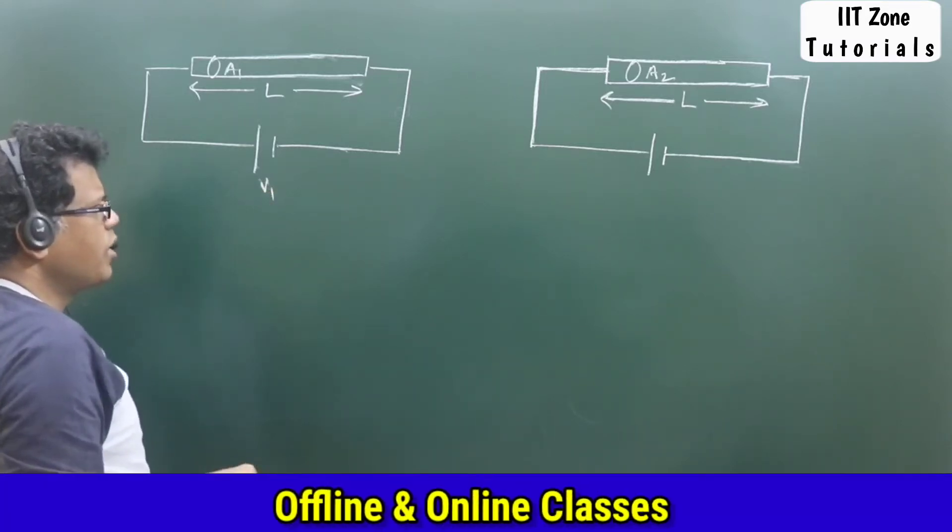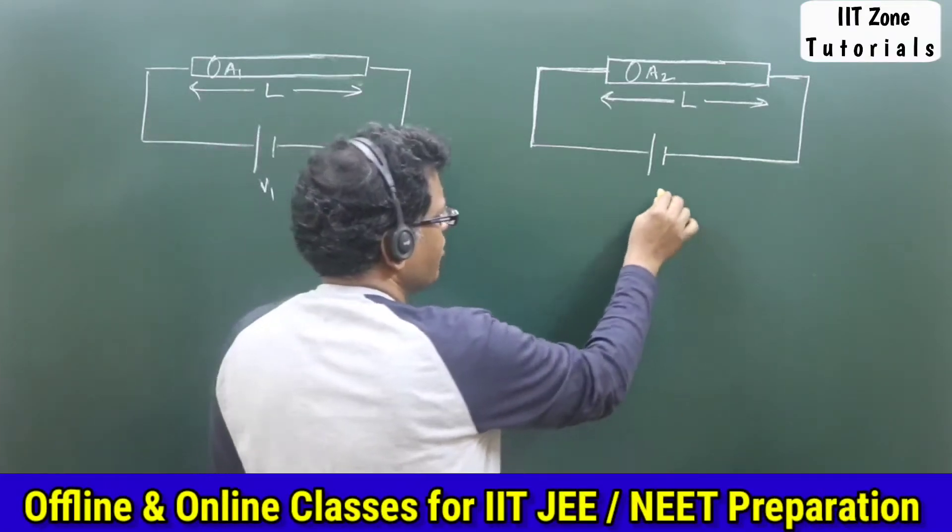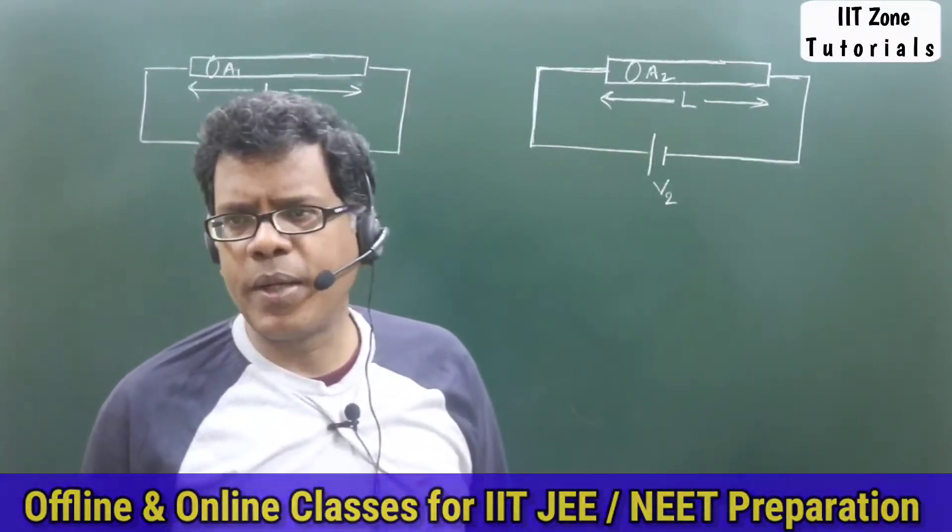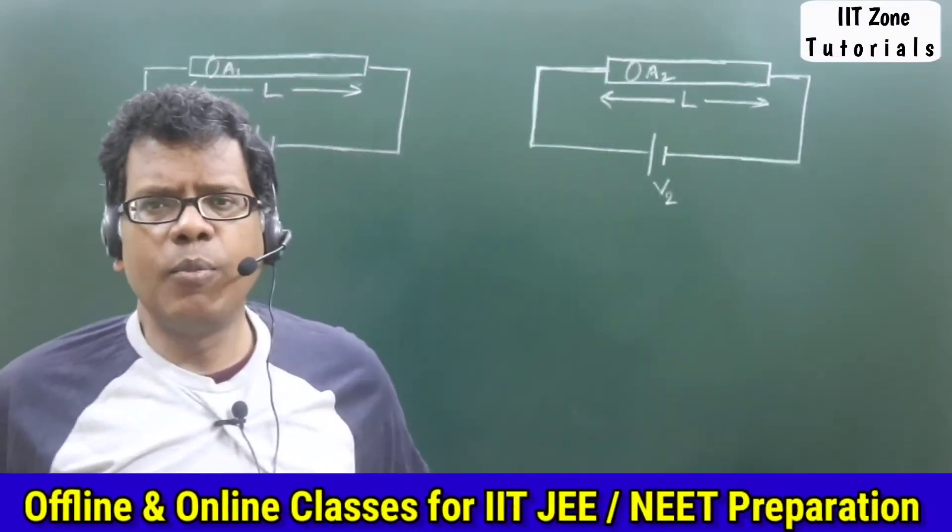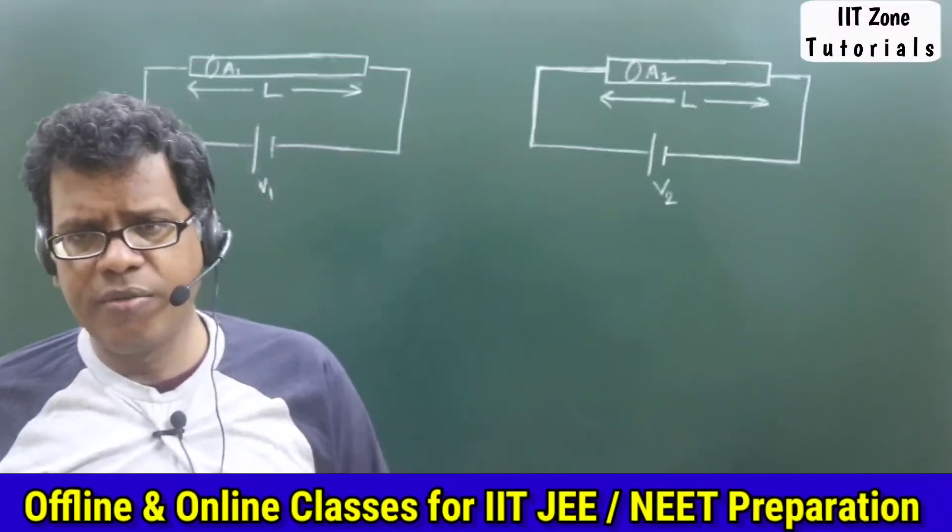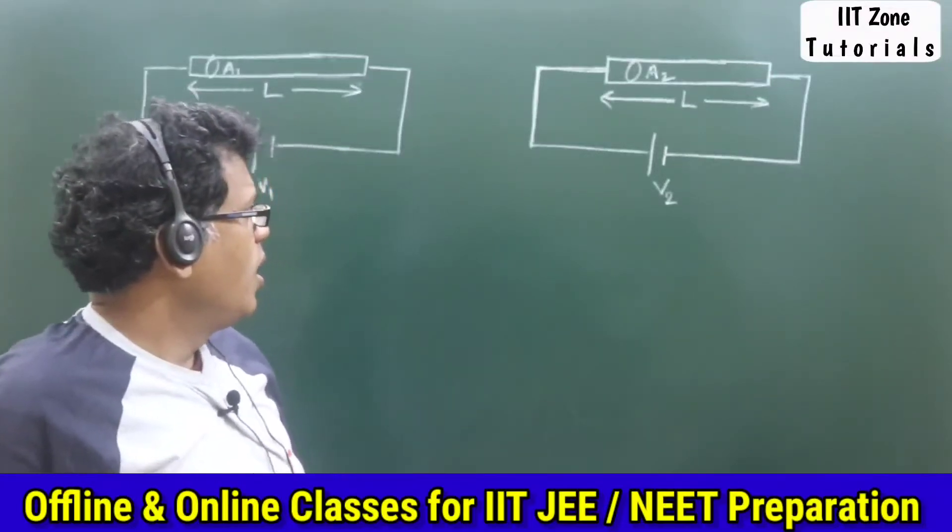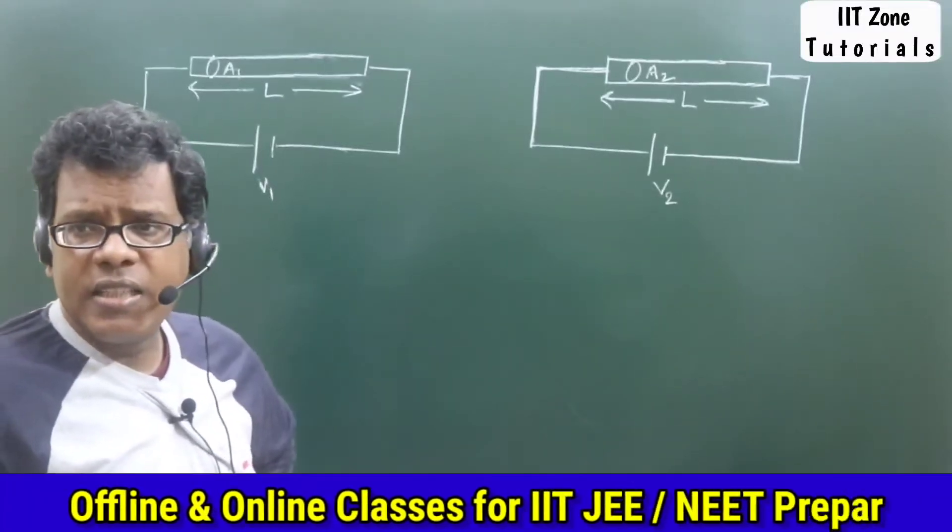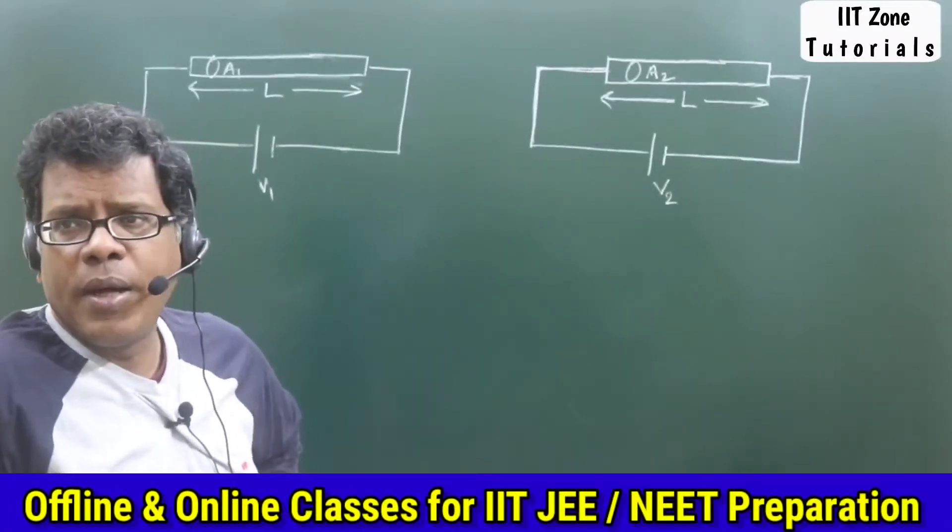Now this is of area of cross-section A2, this one is of area of cross-section A1. Let potential difference of the batteries used in these two circuits be V1 and V2 respectively.